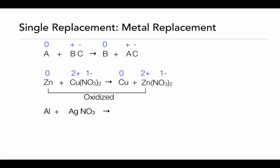We can also see that this is a redox reaction. The zinc has been oxidized — it's lost two electrons to go from a neutral element on the reactant side to the 2 plus cation on the product side. The copper has been reduced — it's gone from 2 plus and gained two electrons to form a zero oxidation state on the product side. All single replacement reactions are going to be a redox reaction.